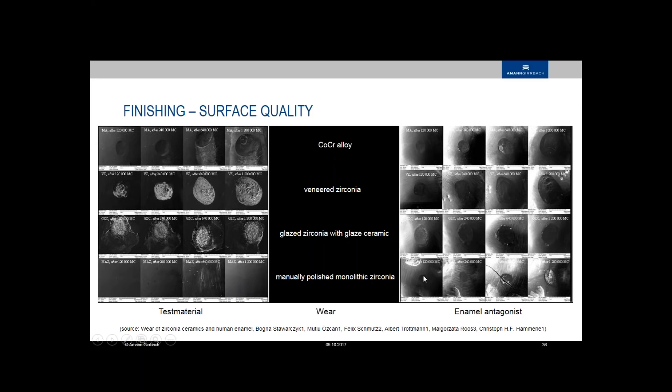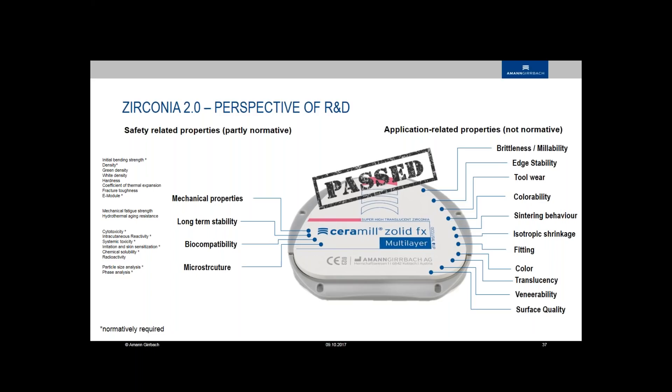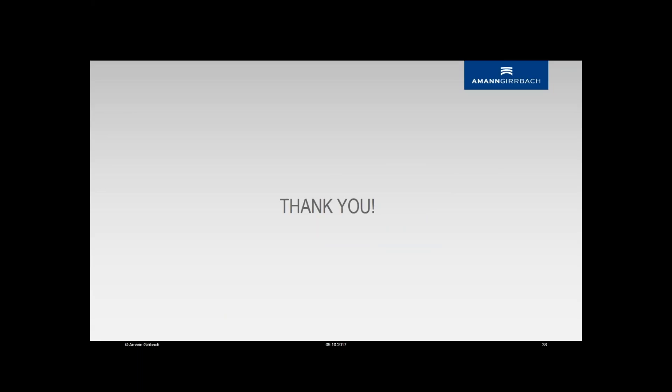In the end, when all this is done, tested and checked, then the material is passed. Not only the normative requirements are fulfilled, also the application related properties are fulfilled and this makes zirconia special and good. This is why we called it also Zirconia 2.0 because it's not only a new generation of material, we also found out a lot of know-how and research and experience on that. What is important in the production and till the end to the dental lab what he has to check in her lab as well. I hope it was very informative for you. Thank you very much.